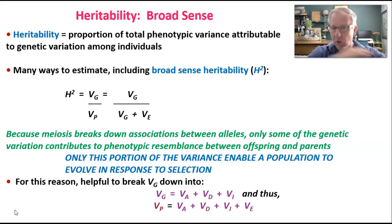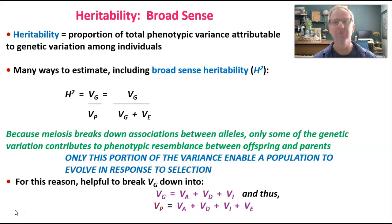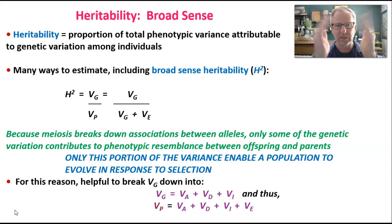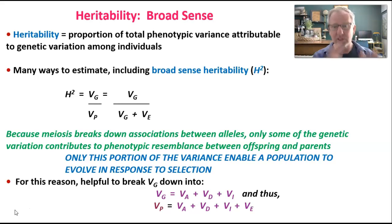Total phenotypic variance is all three genetic components — additive, dominance, and epistatic variance — plus environmental variance. Only part of that genetic variance enables a population to evolve, so we need to isolate it. It's the additive part that's key. We need to break down genetic variance into these different components to see the bigger picture of how populations evolve.